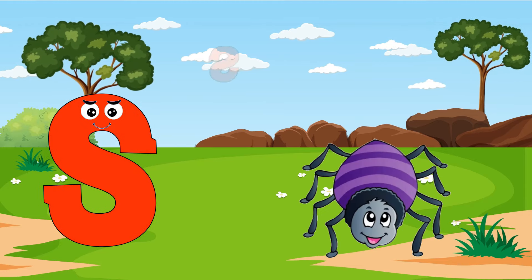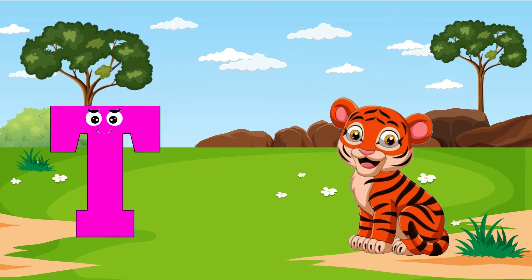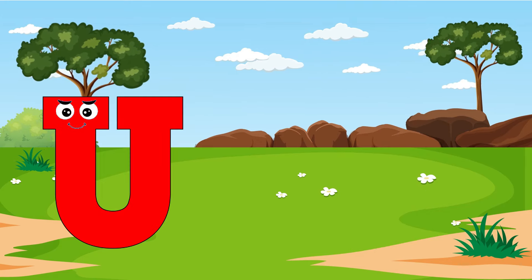Rainbow. S is for Spider, S, S, Spider. T is for Tiger, T, T.